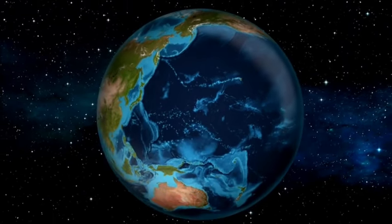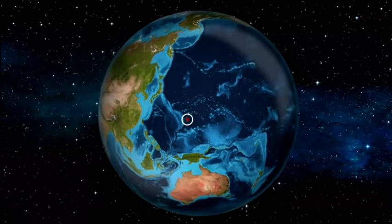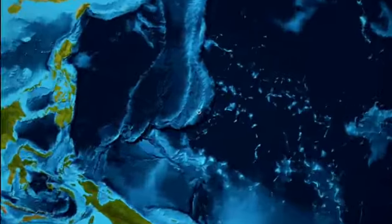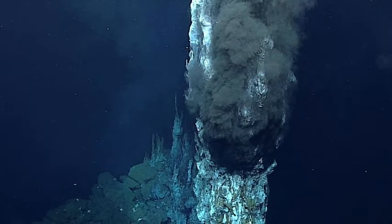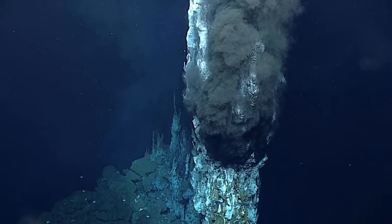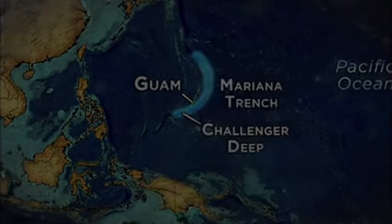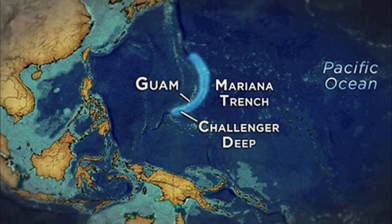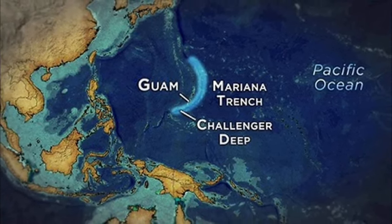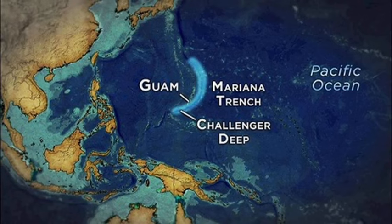To get an idea, one place we could look is within one of the deepest, darkest points on Earth, the Mariana Trench. The deepest point in the Mariana Trench is called the Challenger Deep and is 11 kilometers below sea level. It is difficult to comprehend how deep that actually is, but if you placed Mount Everest there, the peak of the mountain would still be more than 2,000 meters below sea level.